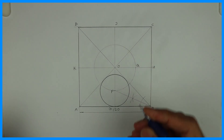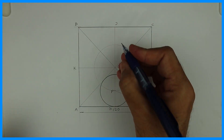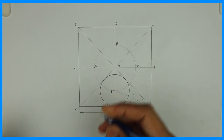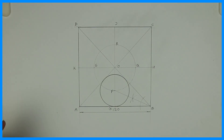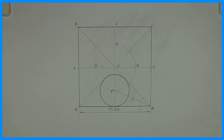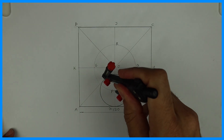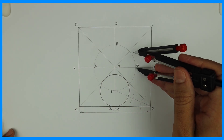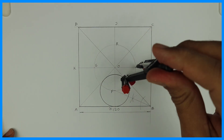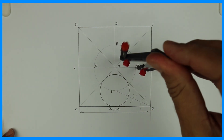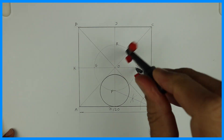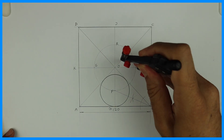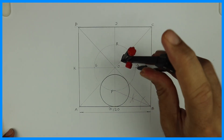We get points Q, R, and S only by doing one construction — that's why we follow this method. Then again, take radius P to G for the first circle, and draw from Q, R, and S. Once you do that, you'll get four equal circles inside a square, touching one side and two other circles.